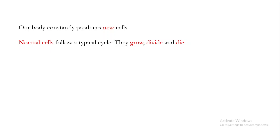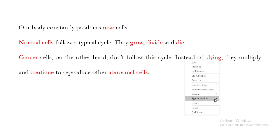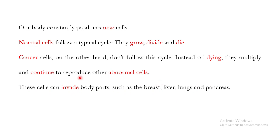The other type of new cells that can be produced in the human body are known as cancer cells. These cancer cells, in comparison to normal cells, usually do not follow the typical cycle of grow, divide, and die. Instead of dying, they multiply and continue to produce other abnormal cells. Since they are not dying, the number of cells in the body exceeds the normal limit, and that excess negatively affects the human body.